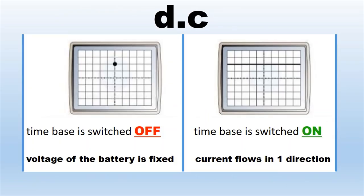For DC, when the time base is switched off, the magnitude of the displacement of the light spot from the zero position shows that the voltage of the battery is fixed and of the same value. When the time base is switched on for DC, the displacement of the light spot from the zero position is positive, meaning the current flows from positive to negative in a straight line and in one direction.